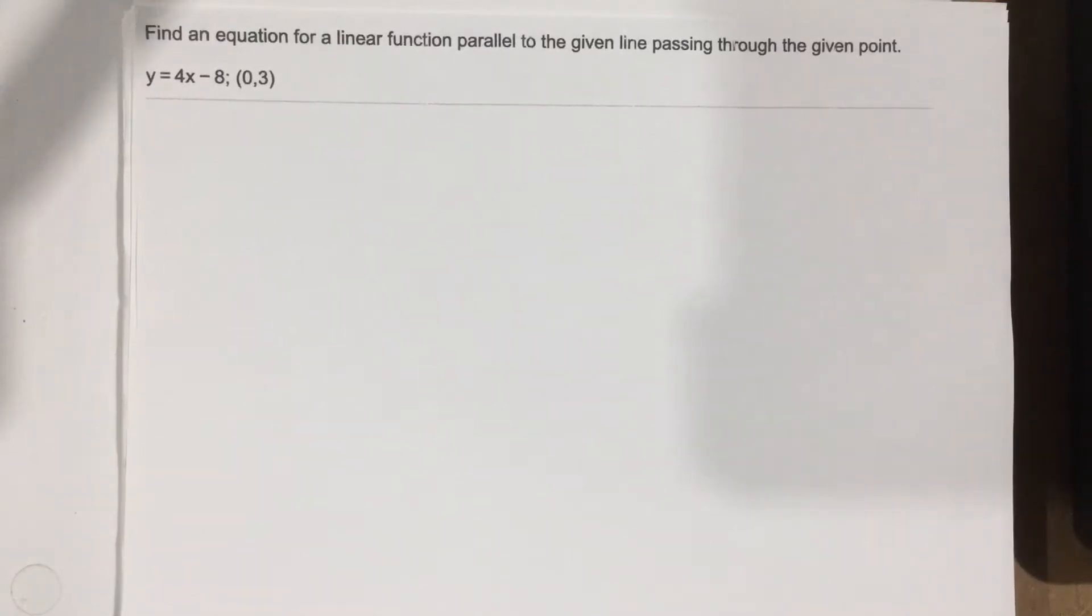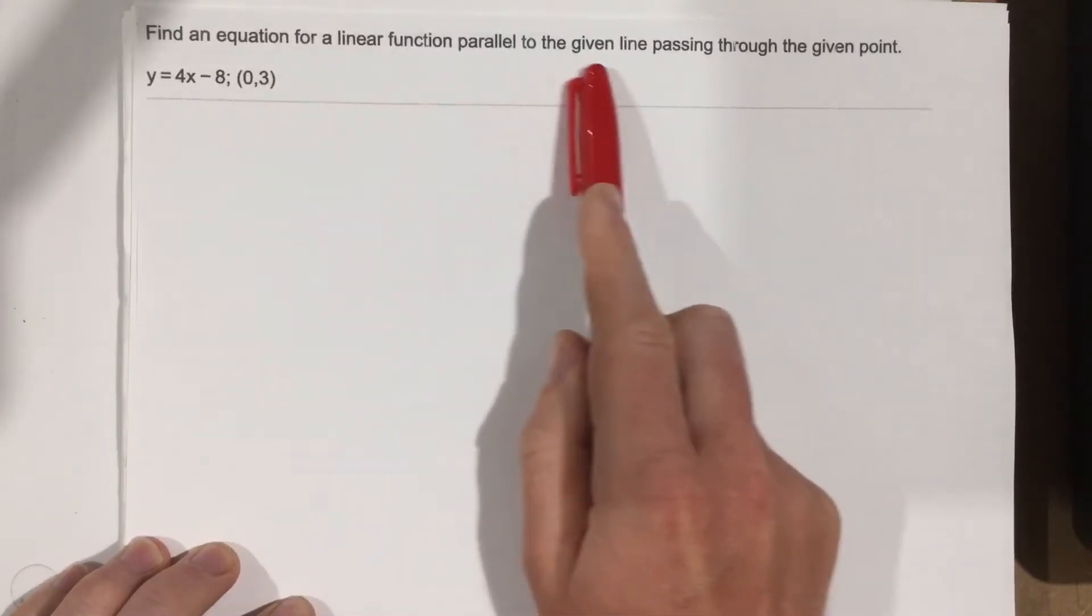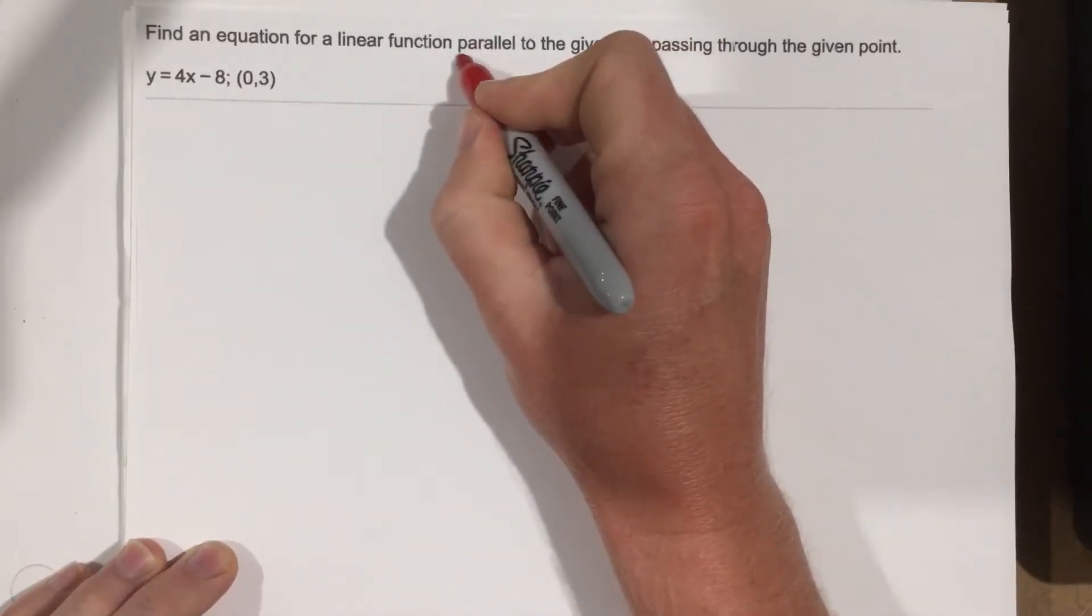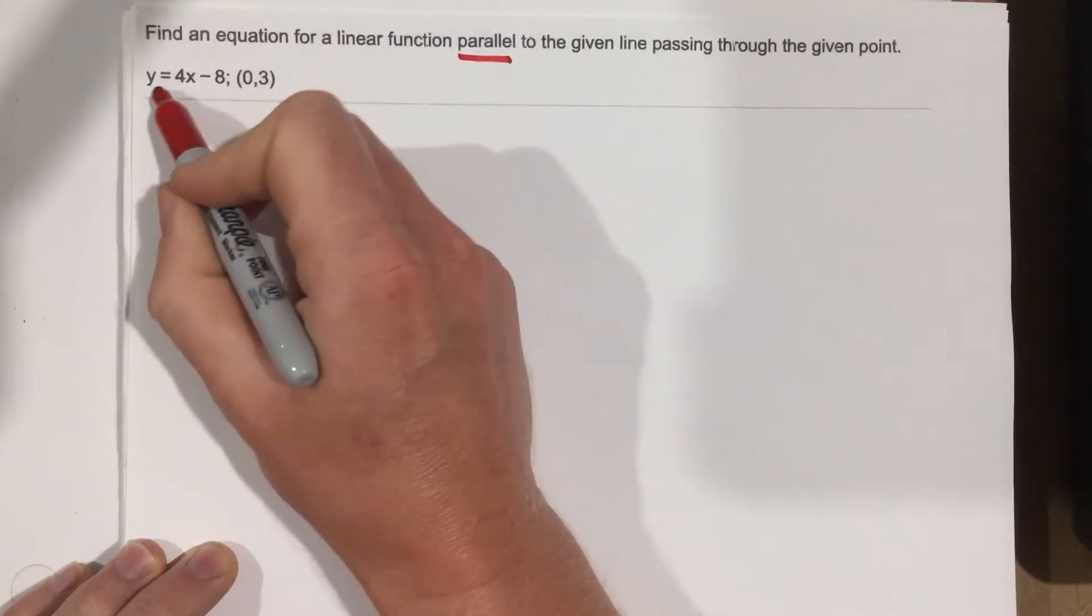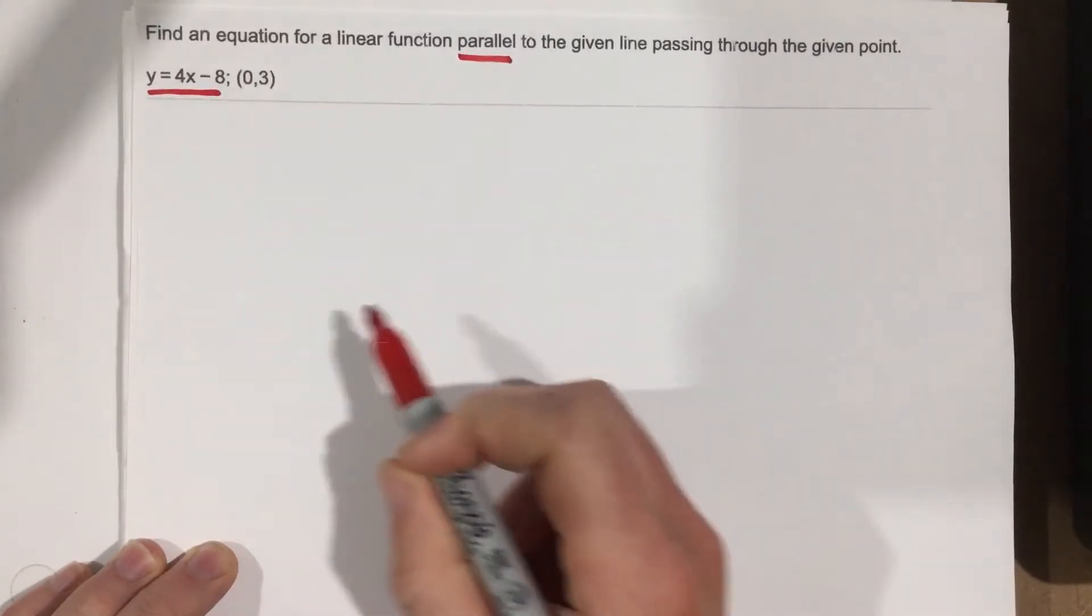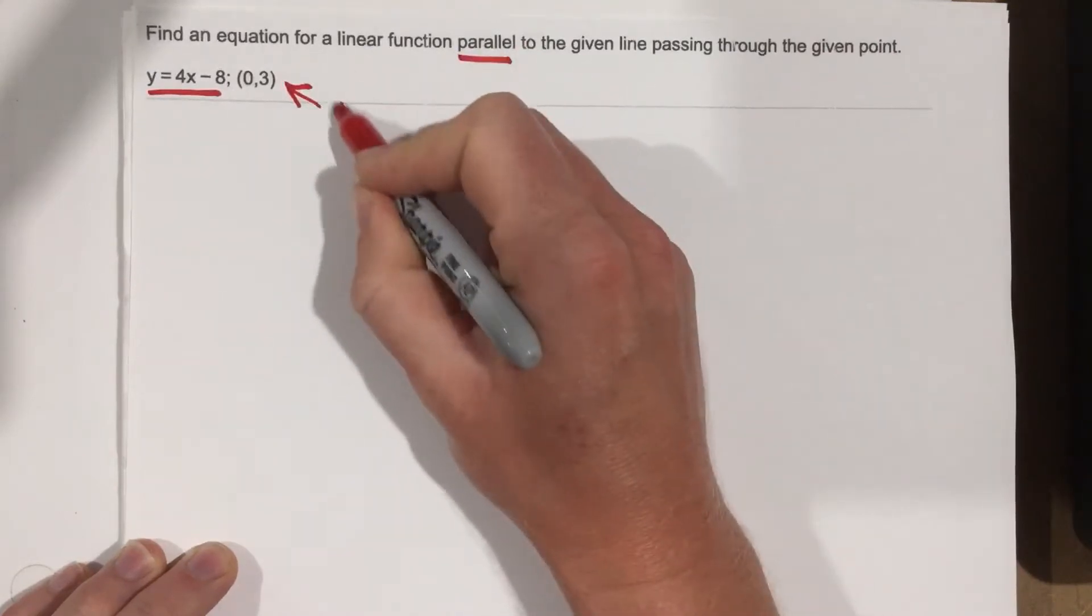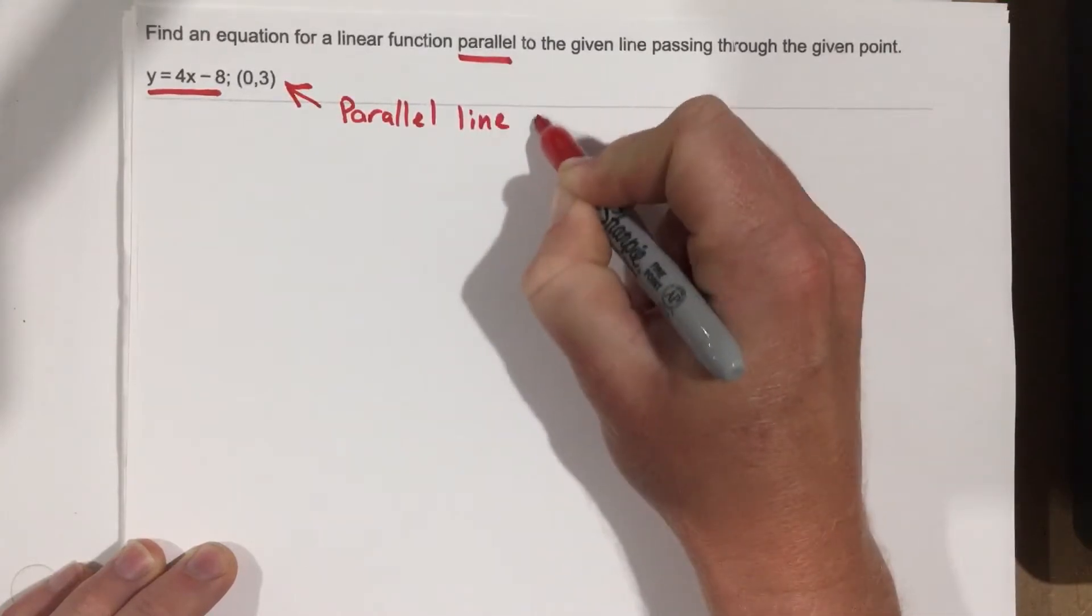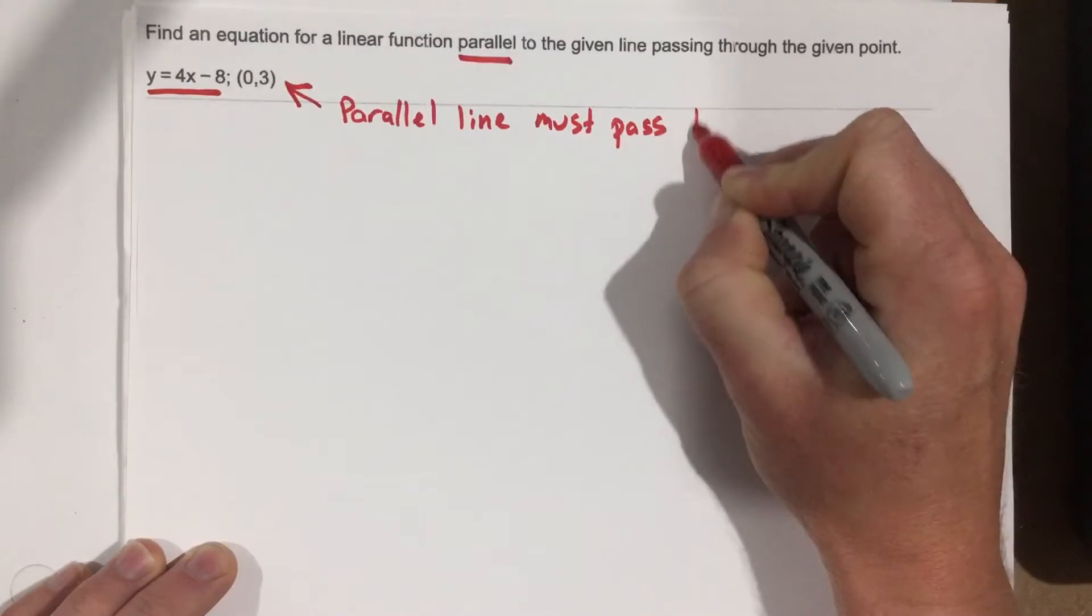This is problem number 2 from section 2.1. In this problem, they want us to find an equation for a linear function parallel to the given line passing through the given point. So they want us to find a parallel line. They give us a line, and they tell us that they want this parallel line to pass through this point. So parallel line must pass through this.